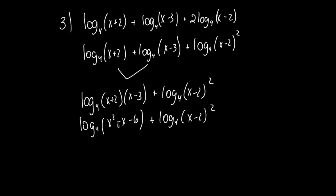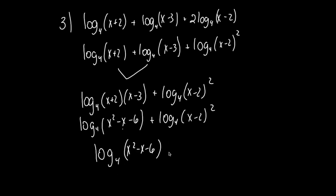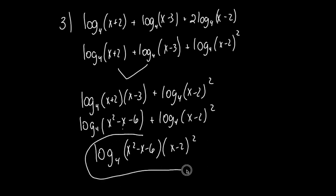Sometimes you see it as a product and sometimes foiled out. Also note: if you were going the opposite direction and expanding, factor first to expand completely. But I'm condensing, so I'll write a single log. I have a sum of two separate logs with the same base, which condenses into a single log of a product: log base 4 of (x² − x − 6)(x − 2) squared. That is my final condensed answer.